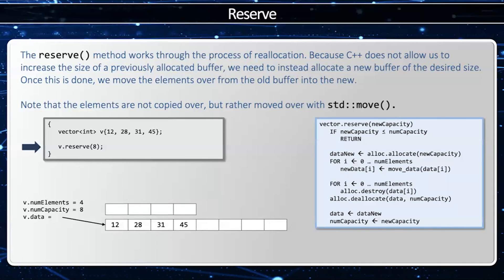Let's take a look at the pseudocode for this. I call reserve with my new capacity. If my new capacity is less than or equal to the old capacity, I do nothing — reserve does not decrease the size of the buffer. Then I allocate the new buffer using an allocator (alloc), which reserves memory without calling the constructor. Then I move the elements over one at a time with a for loop using std::move. Then I destroy the old elements and deallocate the old buffer. When finished, data points to the new buffer and numCapacity equals the new capacity.